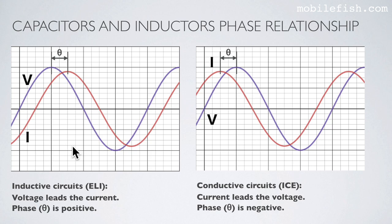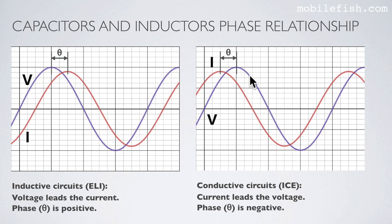This graph represents an inductive circuit where the voltage leads the current — phase theta is positive. For capacitive circuits, the current leads the voltage and phase theta is negative.